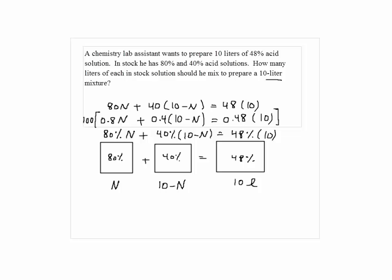So here I get to distribute and multiply here. So let's write down what we have here. We have 80N plus, if I distribute, I get 40 times 10 would be 400 minus 40N is equal to 480. And just simply solve for N. Here you have 80N minus 40N.